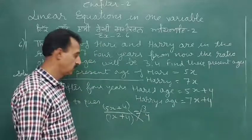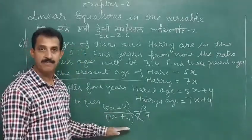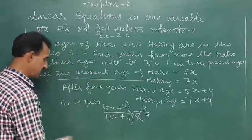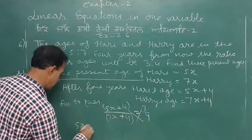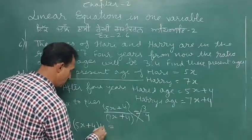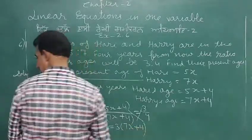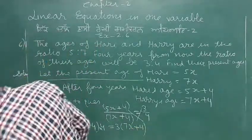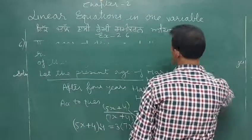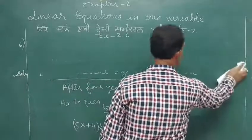So by cross multiplication, five x plus four into four is equal to three into seven x plus four.